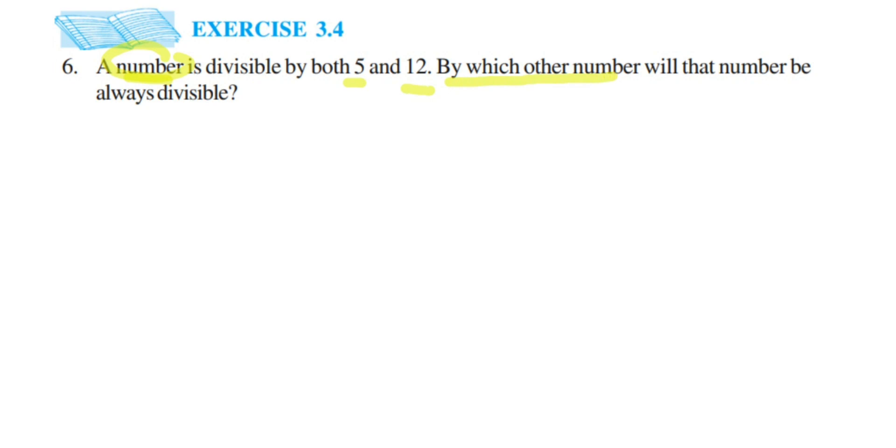To find out that, we are going to find out the factors because factors can divide. Factors of 5 can divide this number, factors of 12 can divide this number. But since they are divisible by both, we have to check the common factor.